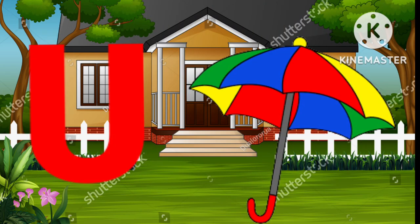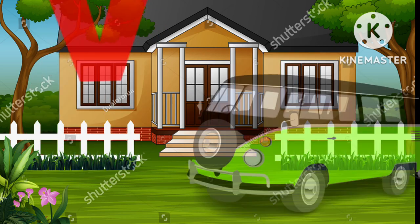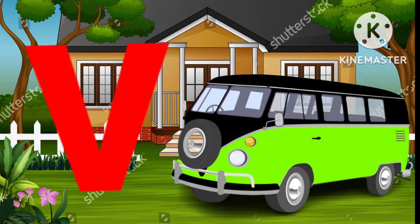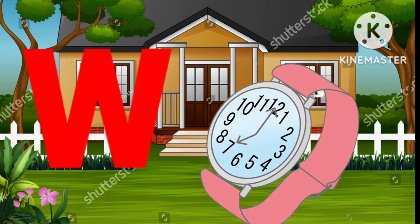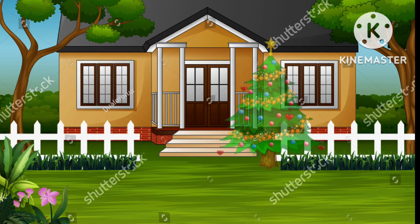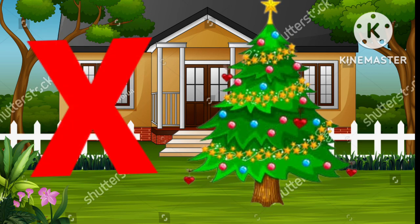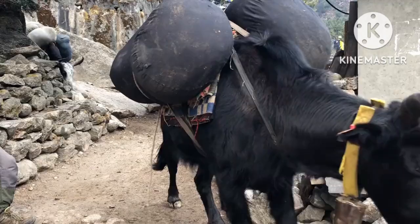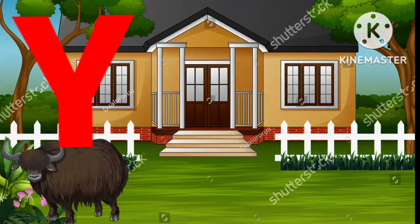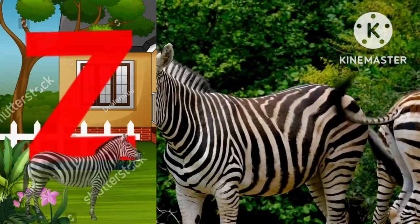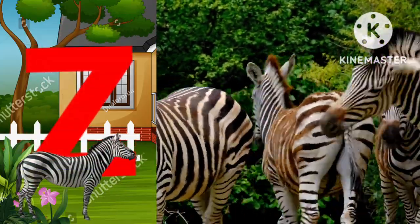U for umbrella, V for van, W for watch, X for xylophone, Y for yak, Z for zebra.